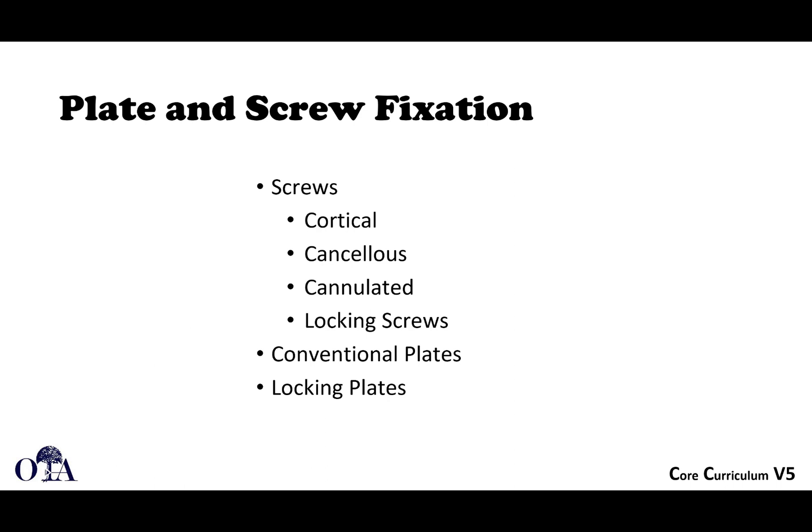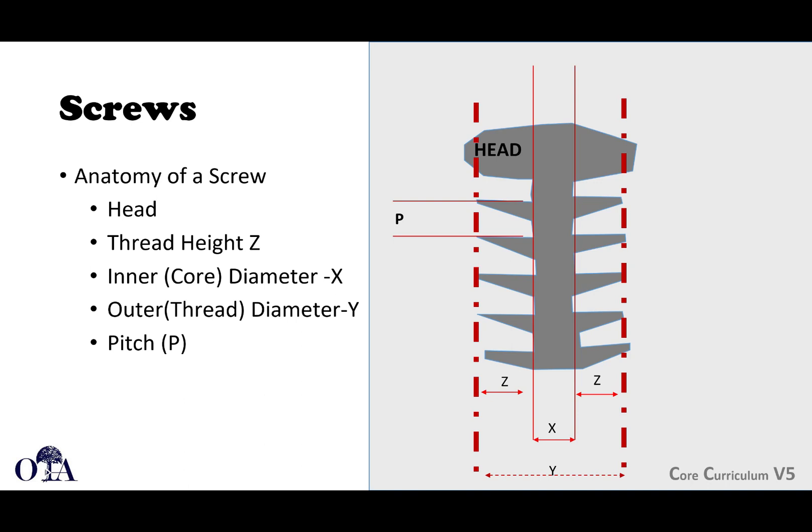For plate and screw fixation, there are many different types of screws: cortical screws, cancellous screws, cannulated screws, and locking screws. There are conventional plates that don't have locking screws, and locking plates. Some plates allow both conventional and locking screws, but you generally cannot use locking screws with a conventional plate that has no locking option.